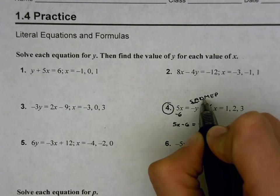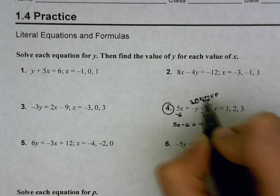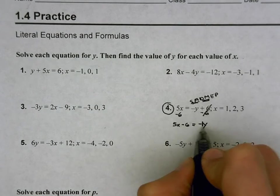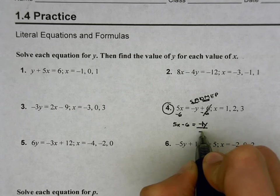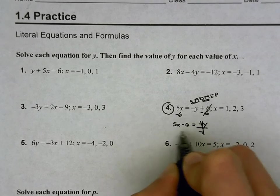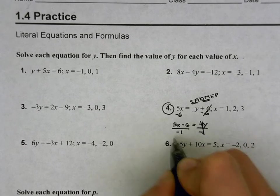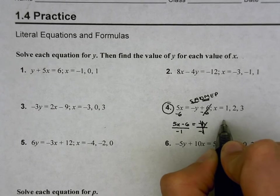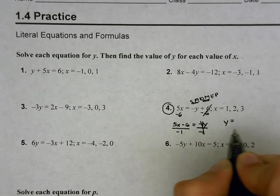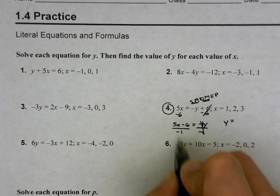So the second part of our SADMAP, after you undo the subtraction addition, you undo the division multiplication. Since these are being multiplied, the opposite of multiply is divide. And again, we have to divide both sides so we maintain equality. So on the one side of the equation, I'm left with just y.